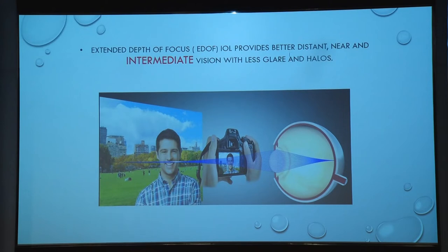In extended depth of focus lenses we get a clear range covering near, intermediate, and distance vision. Sometimes we need to add +1.00 to +1.25D reading glasses for close near work.